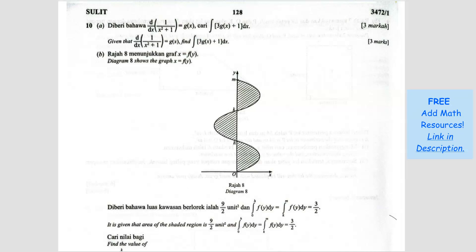Question number 10. Given that, so you differentiate this because it's right here dy/dx. When you differentiate this, you get g(x). So g(x) is basically the differentiation of 1 over x squared plus 1.